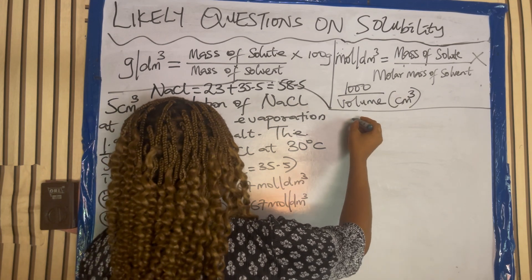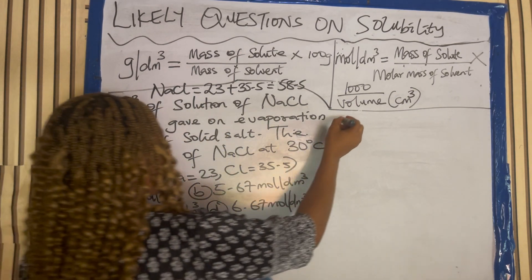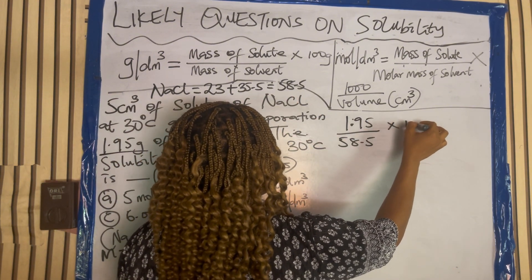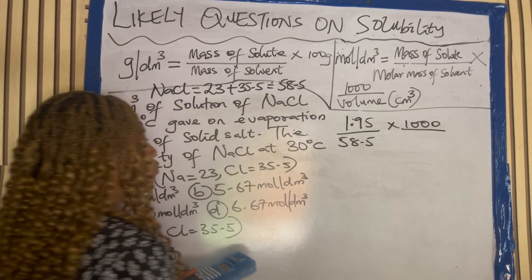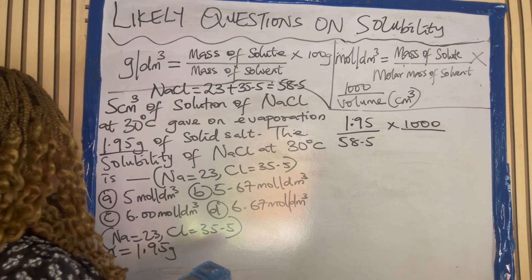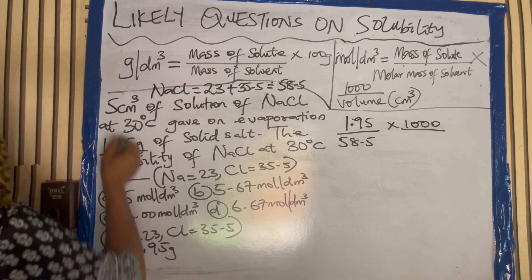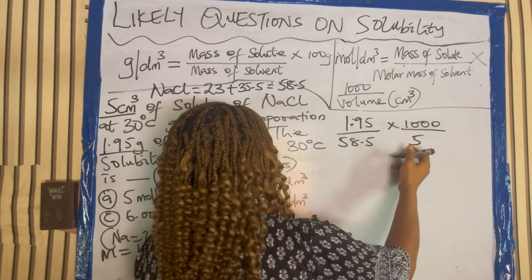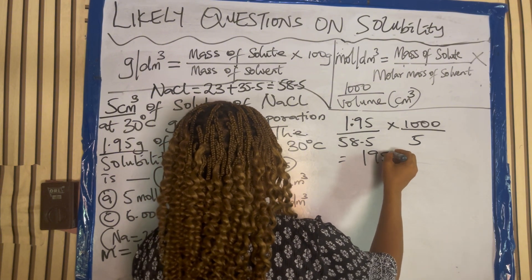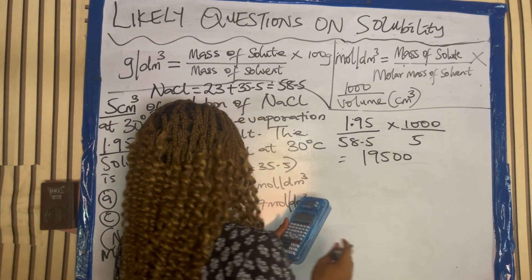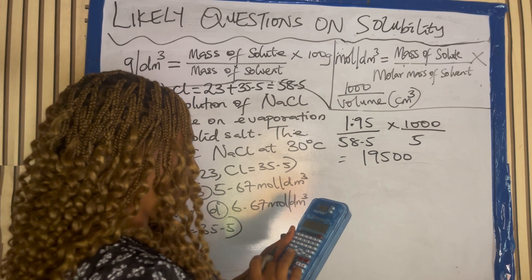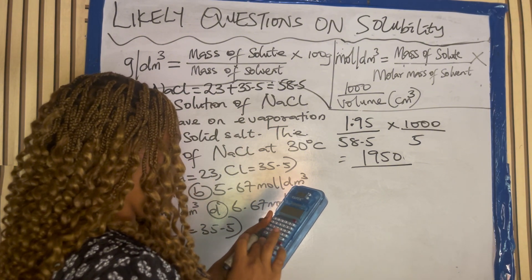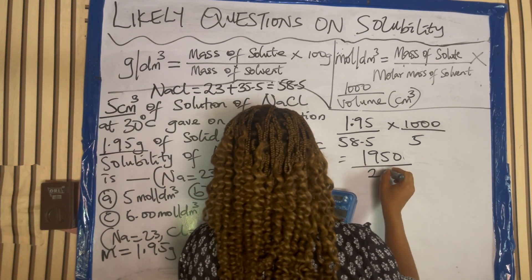Using the formula we have here, mass of the solute from the question is 1.95, over molar mass 58.5, times 1000 over volume. The volume here is 5 cm cube of solution. So from here we have: 1.95 times 1000 gives us 1950, all over 58.5 times 5 which gives us 292.5.